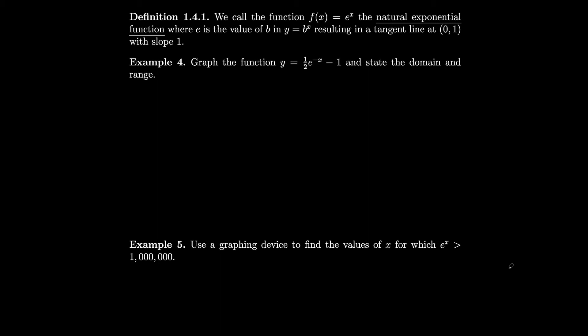We call the function f of x equals e to the x, the natural exponential function where e is the value of b in y equals b to the x resulting in a tangent line at 0, 1 with slope 1. So what that means is that we want to find some sort of function, an exponential function, that if we were to graph it and we were to look at that point 0, 1 and look at the tangent line, which we haven't even defined yet, then this tangent line should have slope 1.